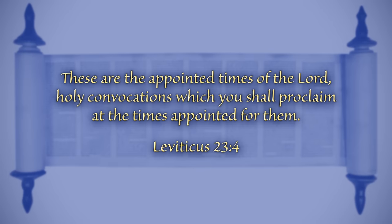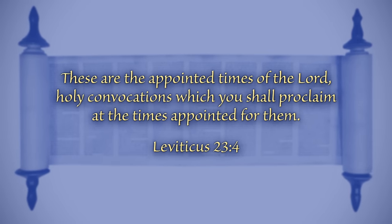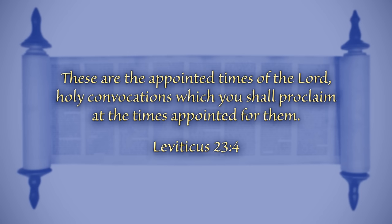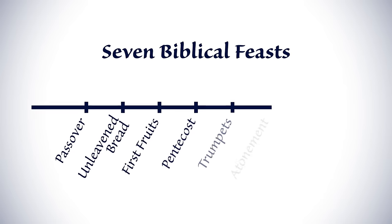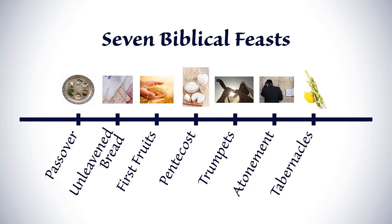Leviticus 23:4 says, These are the appointed times of the Lord, holy convocations, which you shall proclaim at the times appointed for them. The rest of the chapter goes on to describe seven annual feasts when God's people were to worship, repent, celebrate, and reflect on His provision. Observant Jews still celebrate these appointed times today.